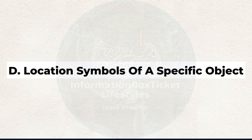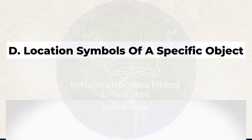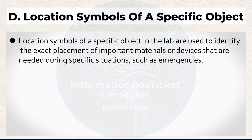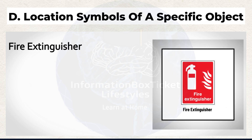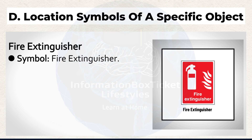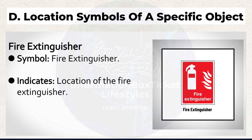D. Location symbols of a specific object in the lab are used to identify the exact placement of important materials or devices that are needed during specific situations, such as emergencies. These include items like first aid kits, fire extinguishers, and emergency bells. Fire Extinguisher symbol indicates the location of the fire extinguisher.